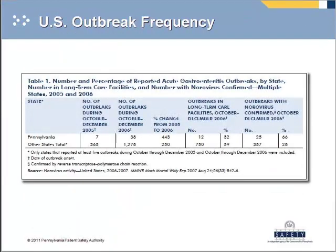According to the CDC, outbreaks of gastroenteritis in Pennsylvania increased 443% from 2005 to 2006, as you can see on this screen. All other reporting states combined experienced only a 250% increase — 193% less than Pennsylvania. Thirty-two percent of these outbreaks occurred in long-term care facilities, and norovirus was confirmed in 66% of the 2006 Pennsylvania outbreaks.